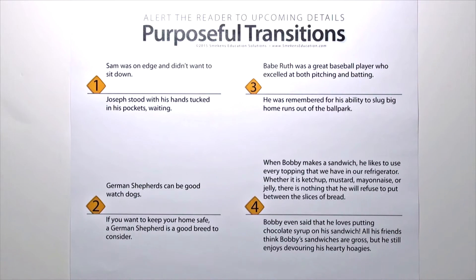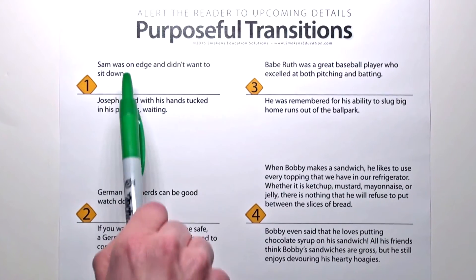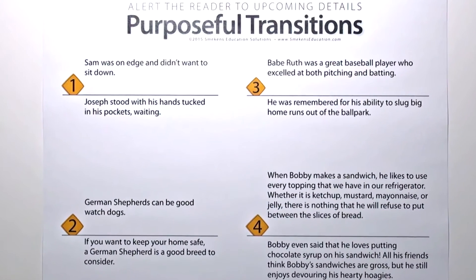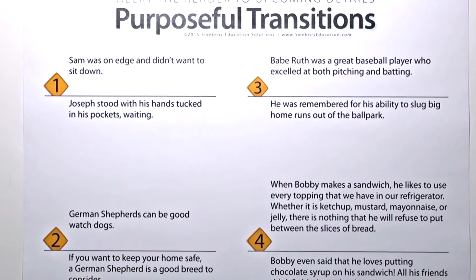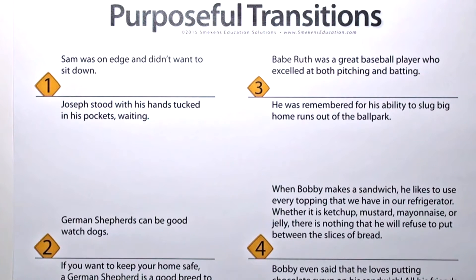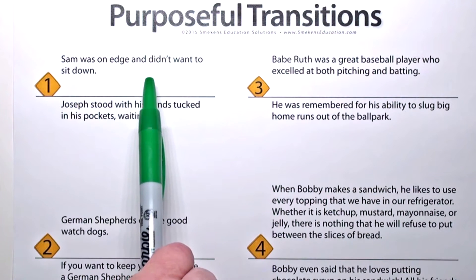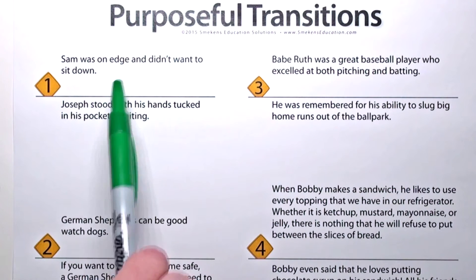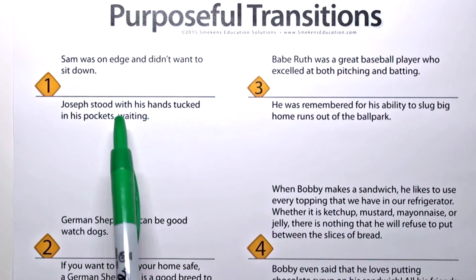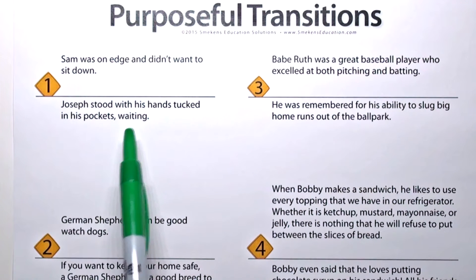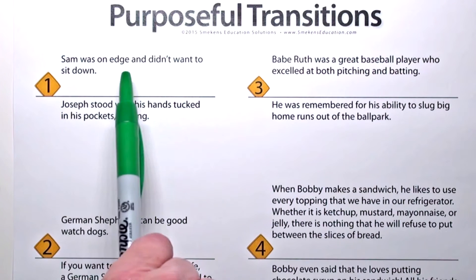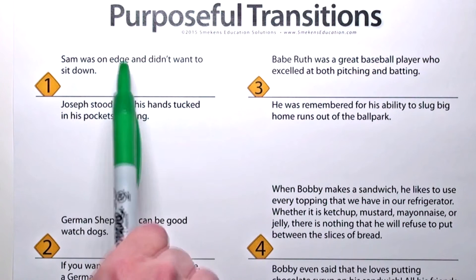That's when you provide some example sentences and let kids listen to you rationalize your choices. Here's one way to try this: provide two sentences that are related but leave out the transition. Read them aloud and let students listen to your thinking. Sam was on edge and didn't want to sit down.